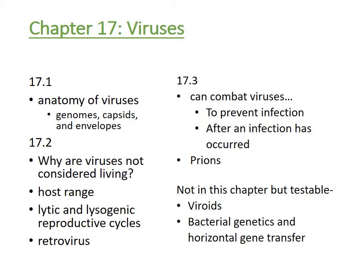Chapter 17 goes over viruses and prions. We'll also talk about viroids and a bit more on bacterial genetics and horizontal gene transfer. Topics include the anatomy of a virus, why a virus is not considered living, host range, viral replication cycles, how to prevent infection, what to do after an infection has occurred, prions, viroids, and bacterial genetics.